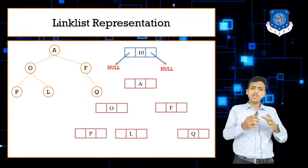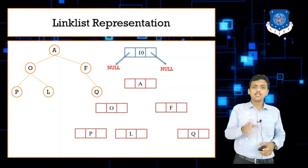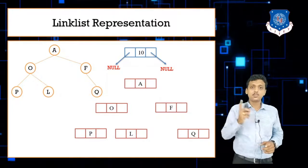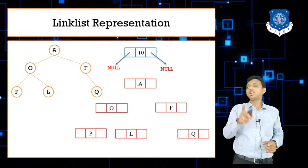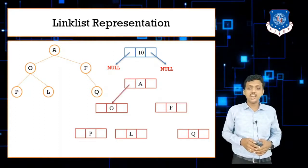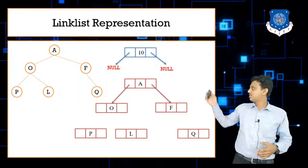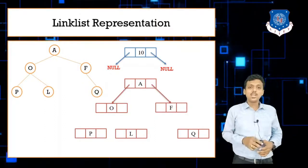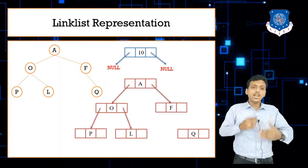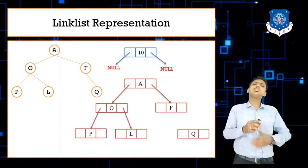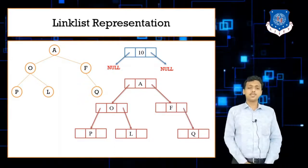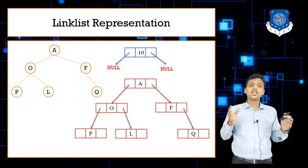To convert the tree to a linked list, we create nodes for A, O, F, P, L, and Q. A's left pointer points to O and A's right pointer points to F. Then O's left pointer points to P and O's right pointer points to L. F's right pointer points to Q.